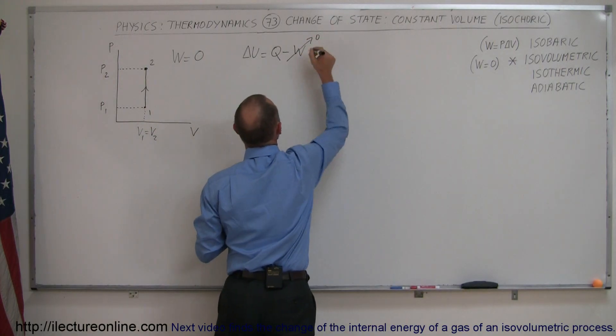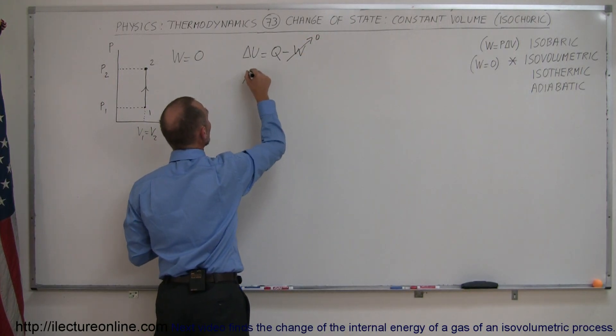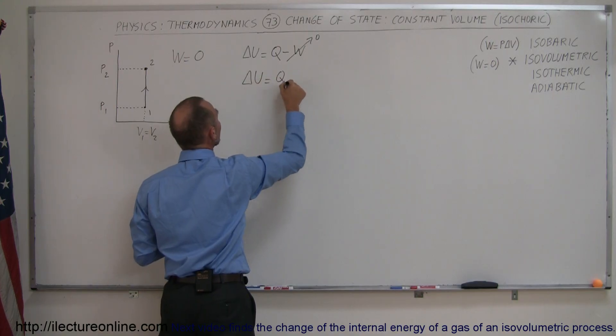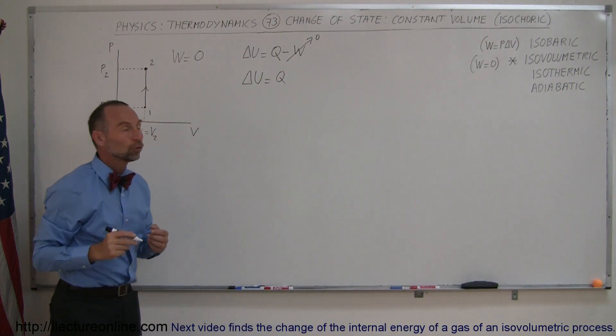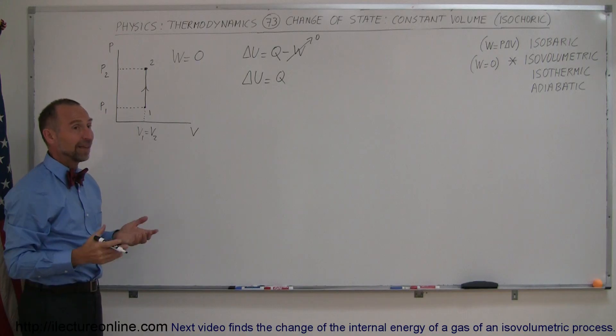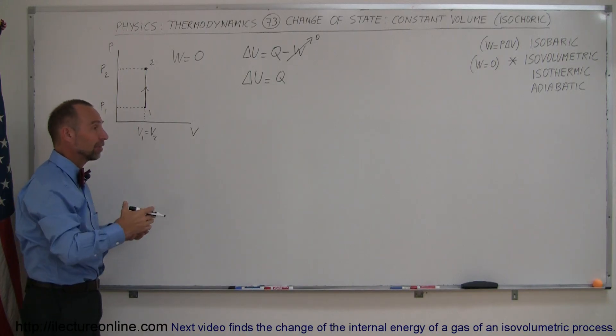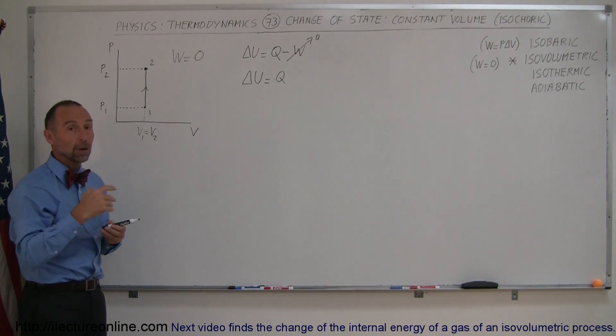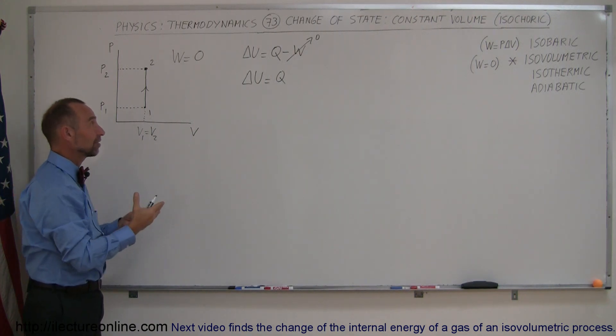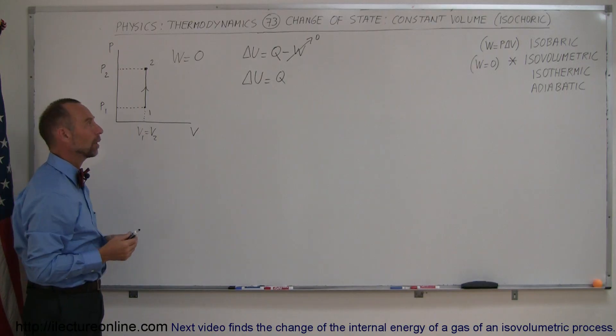But since we know that the work done by the gas is equal to 0, the equation then simplifies to the change in internal energy is equal to the heat added to the gas. So what's happening here is we add heat to the gas, the gas increases internal energy by the exact same quantity. We take heat away from the gas, the internal energy of the gas decreases by the exact same quantity.